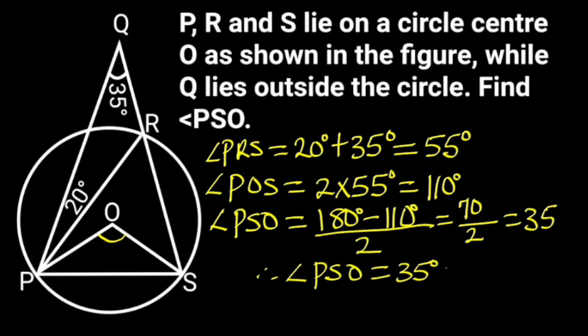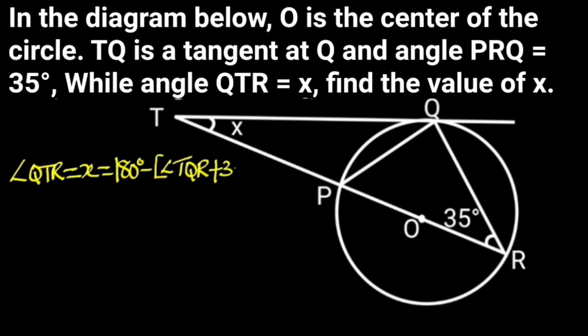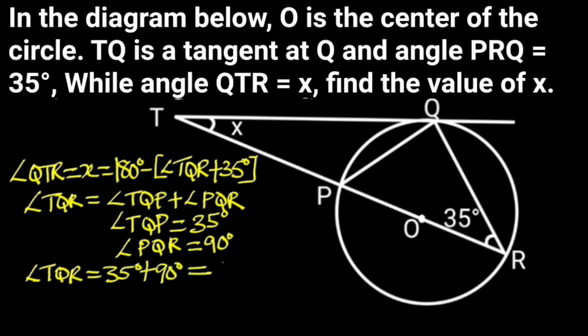In the diagram, O is the center of the circle, TQ is a tangent at Q, and angle PRQ equals 35 degrees, while angle QTR equals X. Find the value of X. Solution: Angle QTR, which is X, equals 180 degrees minus (angle TQR plus 35 degrees). Reason: Sum of angles in a triangle. Angle TQR equals angle TQP plus angle PQR. Angle TQP equals 35 degrees. Reason: Angle in alternate segment. Angle PQR equals 90 degrees. Reason: Angle in semi-circle.